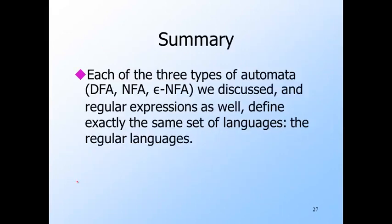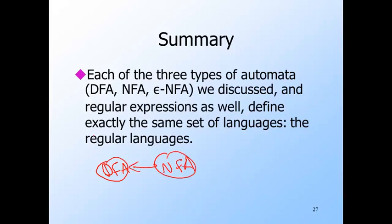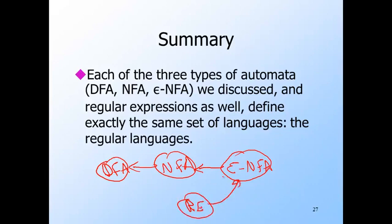Each of the three types of automata — the DFA, the NFA, and the epsilon-NFA — and regular expressions as well, define exactly the same set of languages: the regular languages. We started with the DFA, showed any NFA can be converted to a DFA via the subset construction, showed any epsilon-NFA can also be converted to a DFA, showed any regular expression can be converted to an epsilon-NFA, and now showed every DFA can be converted to a regular expression. Therefore, any language defined by any one of these four notations is defined by all the others.